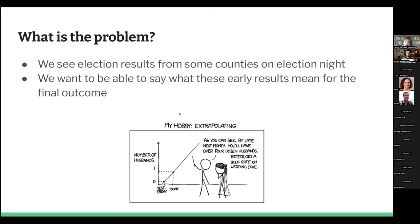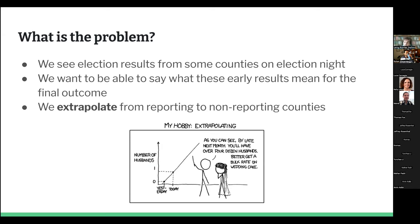So what is the problem we're trying to solve? We see election results from counties coming in on election night, and we want to say something about what these early results might mean for the final outcome. Specifically, we're extrapolating from the reporting counties or precincts to non-reporting counties and precincts — we're seeing something and trying to say what it tells us about all the other unseen data.